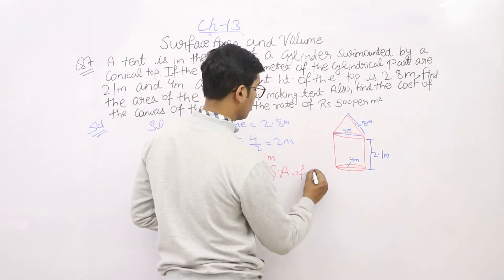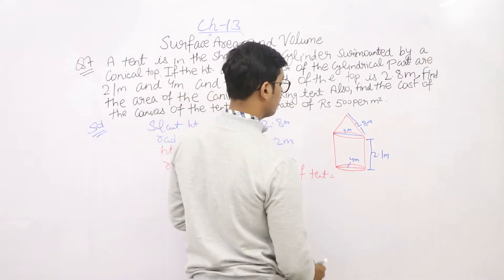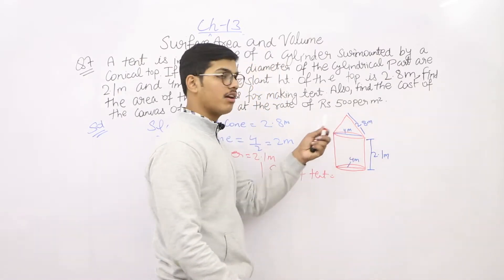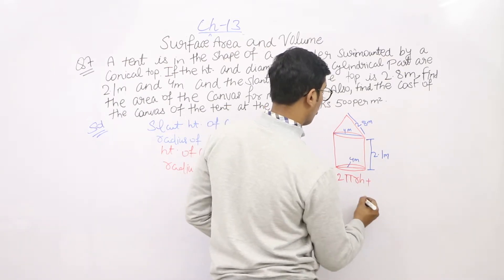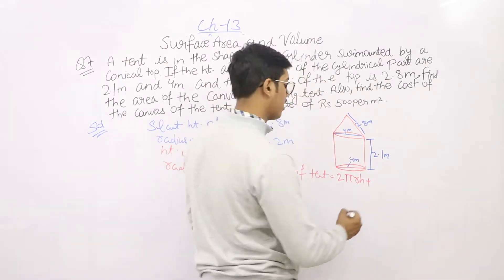Surface area of tent equals curved surface area of cylinder plus curved surface area of cone. Curved surface area of cylinder is 2πrh. Curved surface area of cone is πrl.